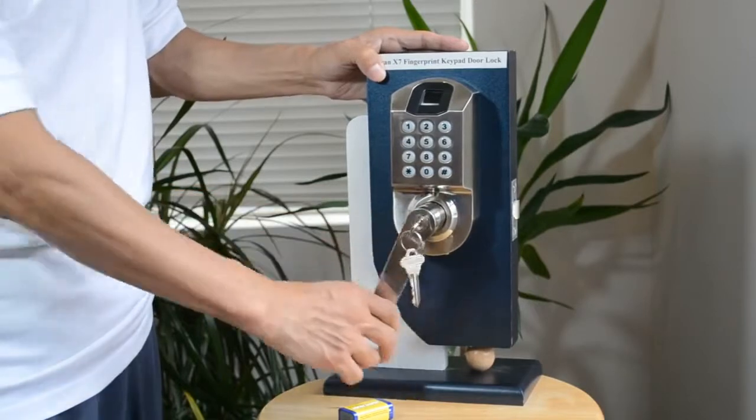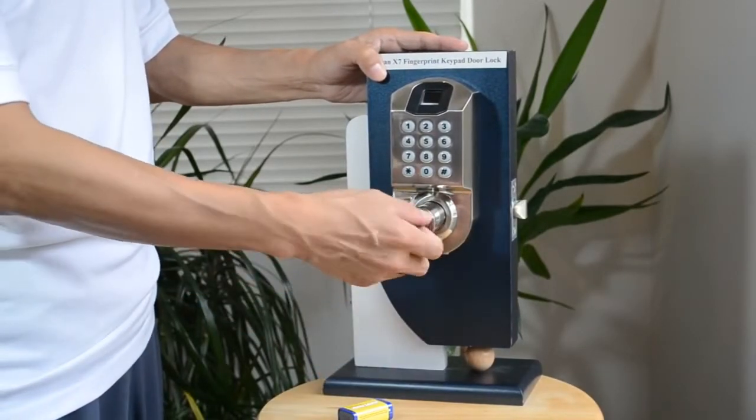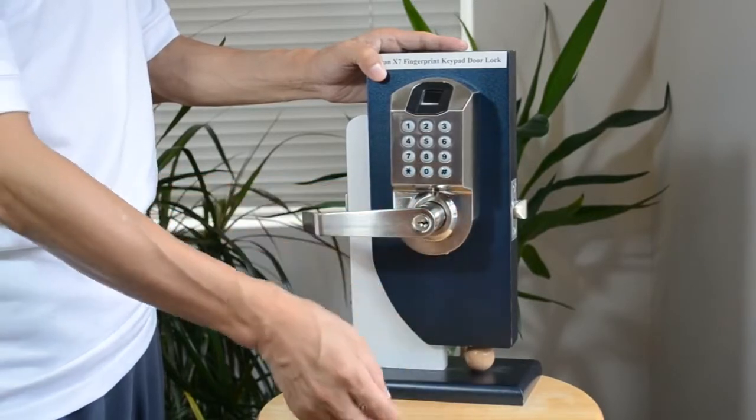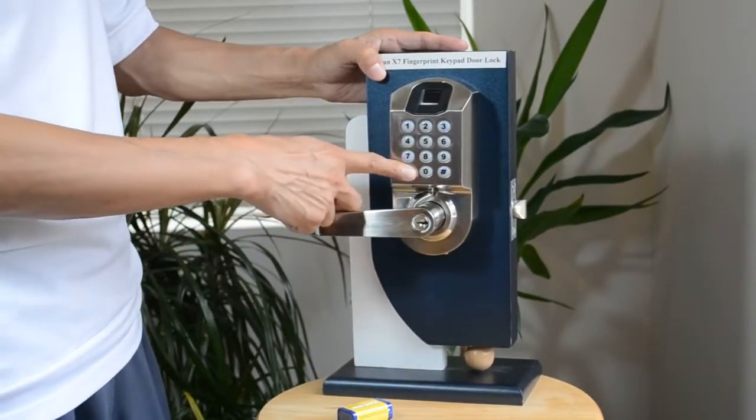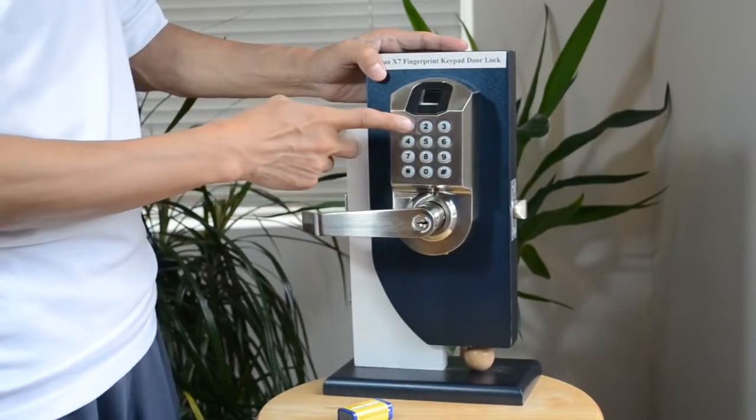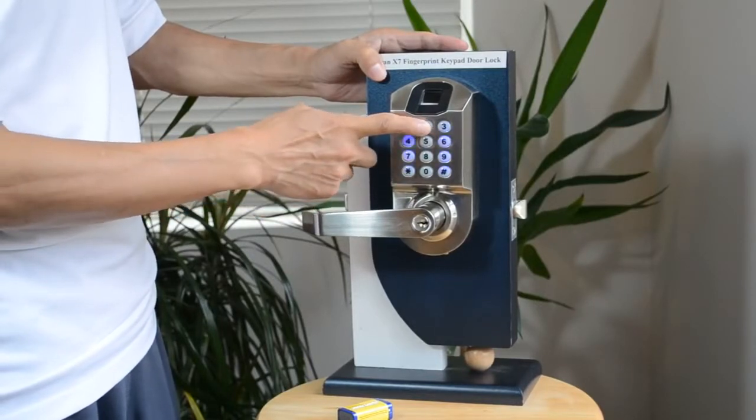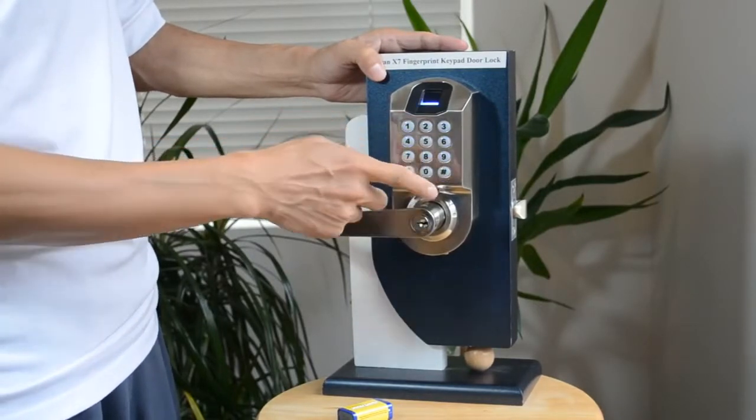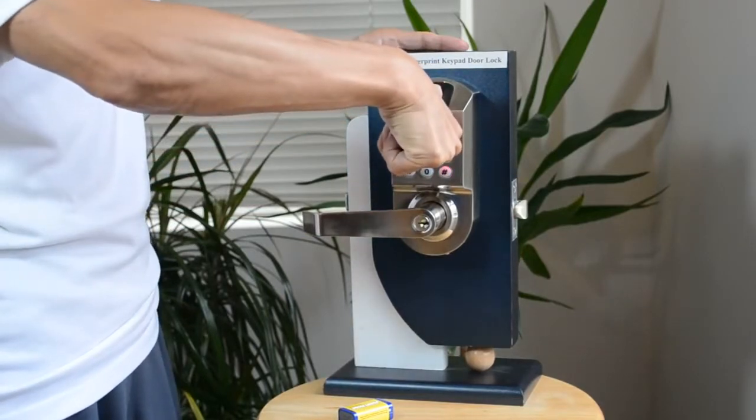Next, I will teach you how to enroll someone's fingerprint. First, press the star, then put the administrator finger on the keypad. Then put in the command, and after that put in the user ID.